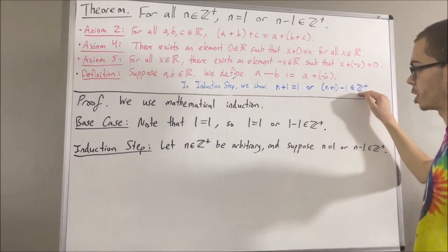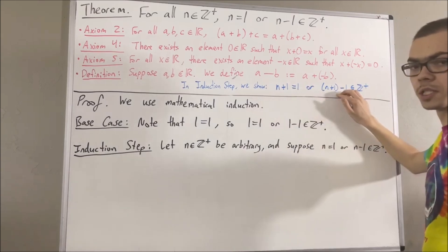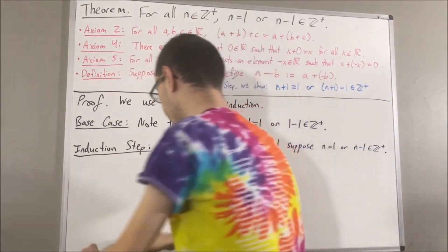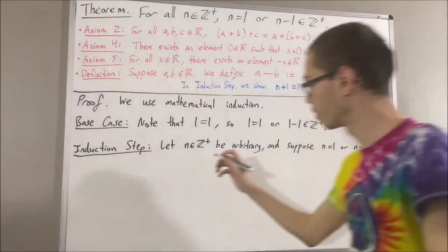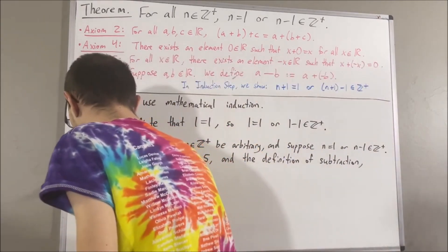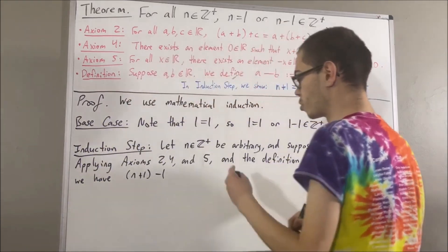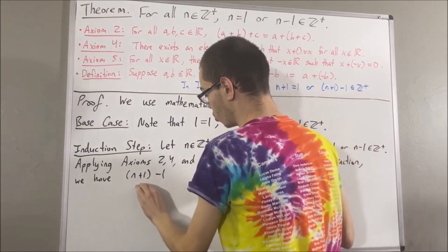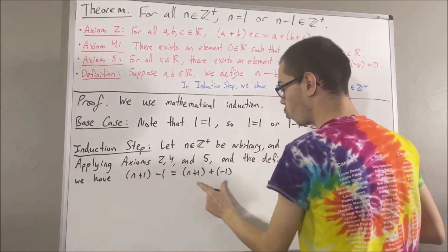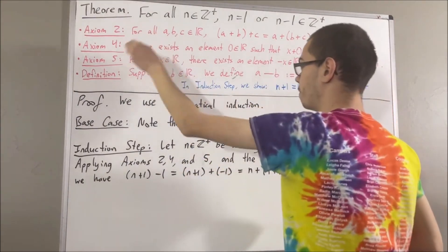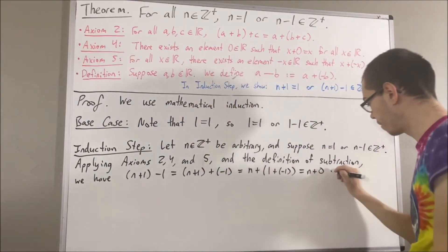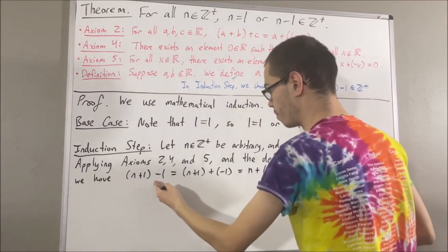To prove this statement, all we have to do is show that at least one of these statements is true. We're going to show that n plus 1 minus 1 is a positive integer. Now, applying axioms 2, 4, and 5 and the definition of subtraction, we can show that n plus 1 minus 1 is equal to n. By definition of subtraction, n plus 1 minus 1 equals n plus 1 plus the negative of 1. Then, by axiom 2, we can move the parentheses around 1 plus negative 1. By axiom 5, 1 plus negative 1 is equal to 0. And then, by axiom 4, n plus 0 is equal to n. So, this shows that n plus 1 minus 1 is equal to n.